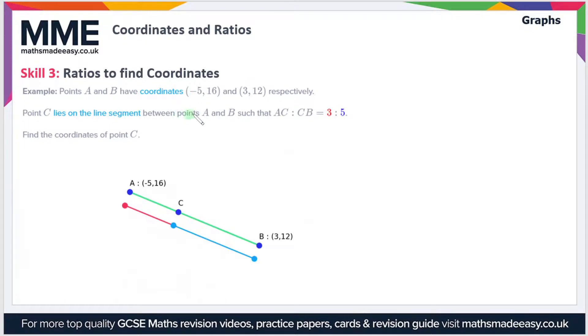The first thing we have to do is look at our ratio, which is 3 to 5. Let's mark these on the line segment, so we have three parts here to five parts there. The total number of parts is eight, that's just 3 plus 5.